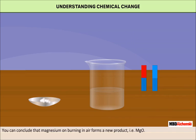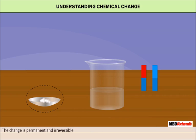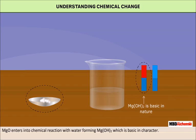You can conclude that magnesium, on burning in air, forms a new product — magnesium oxide. The change proceeds with the evolution of heat and light, and the change is permanent and irreversible. The magnesium oxide, when added to water, undergoes another chemical reaction forming magnesium hydroxide, which is basic in character.